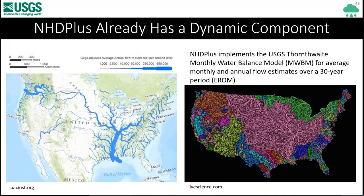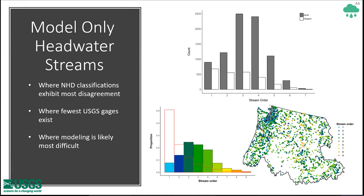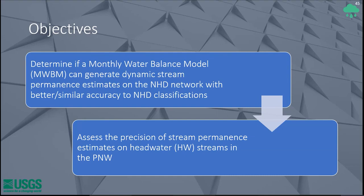Our idea was to use the monthly water balance model, not averaged over 30 years, but on a monthly time step for discrete years. I'm limiting the modeling to headwater streams because that's where we saw the greatest NHD disagreement, where the fewest USGS gauges exist, and it simplifies modeling by avoiding routing water downstream. The objectives were to determine if the MWBM can generate dynamic stream permanence estimates on the NHD network with better or similar accuracy to existing NHD classifications, and assess the precision of estimates on headwater streams in the Pacific Northwest.